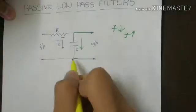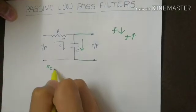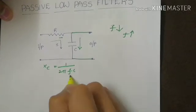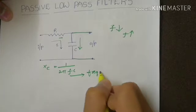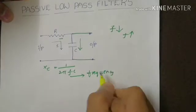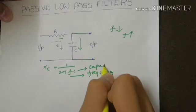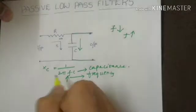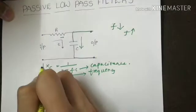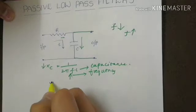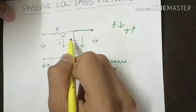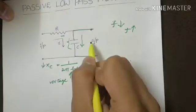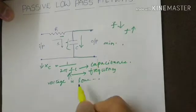Now we know that capacitor reactance is given by 1 upon 2πfc where f is frequency of our input signal and c is capacitance. When this frequency is high, capacitor reactance is low and voltage drop in this capacitor is also low. So there is minimum output when frequency is high.